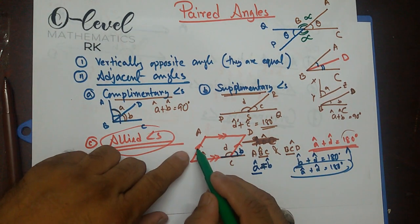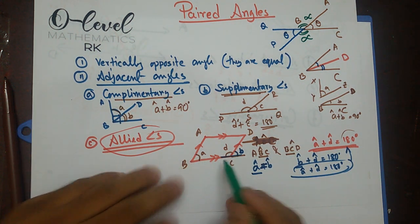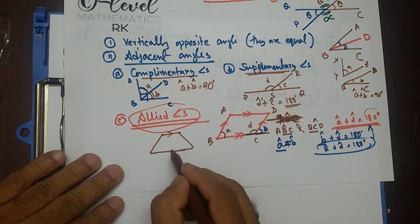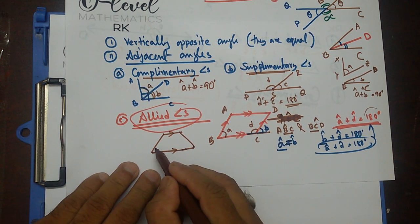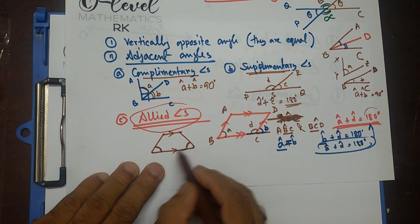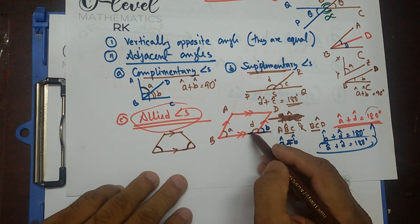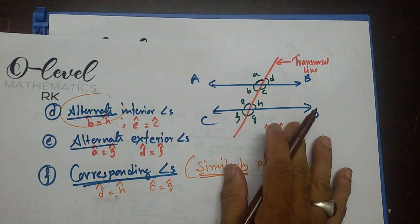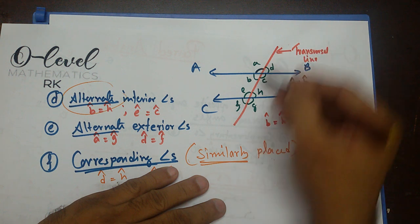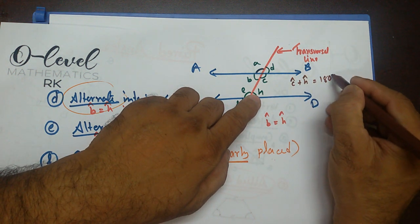Allied angles occur in parallel lines — in a parallelogram, for instance. They share one common side, and their sum equals 180 degrees. You can also see in this diagram that angle C plus angle H — these are inside the parallel lines with the transversal forming corresponding angles, so these two sum to 180 degrees and they are allied angles.